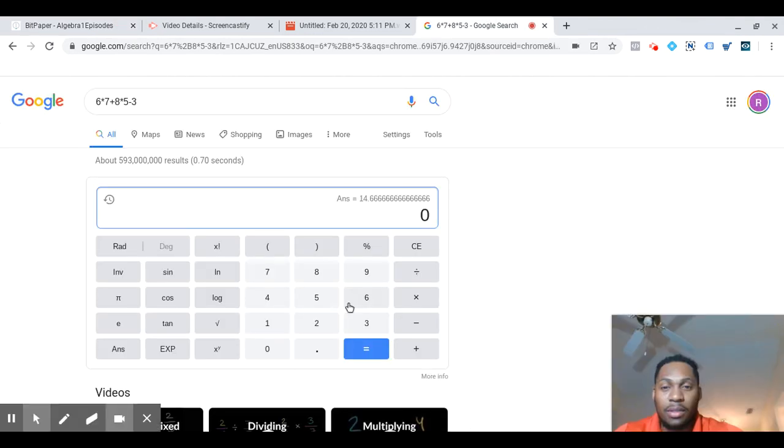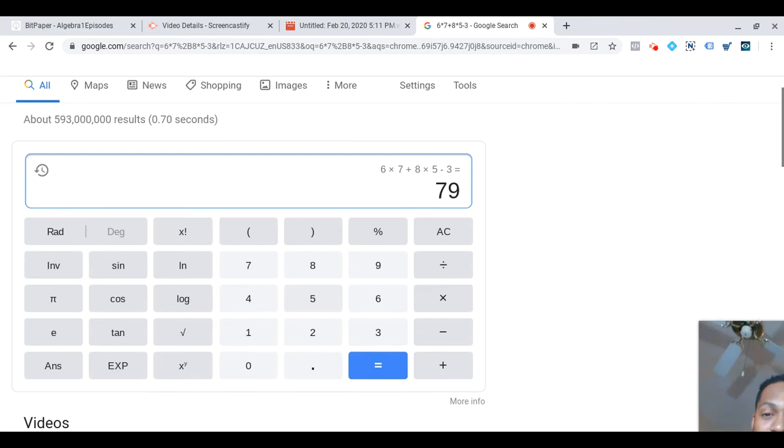So you say 6 times 7, 6 times 7 plus 8 times 5, minus 3. And the order of operation works in a way where you can, where that can happen.